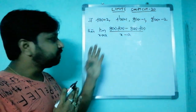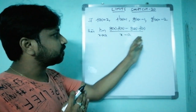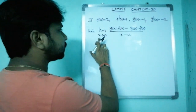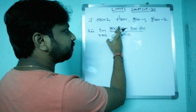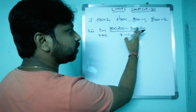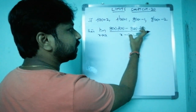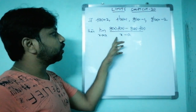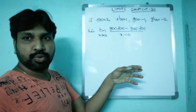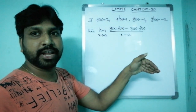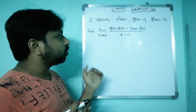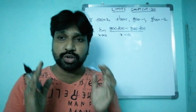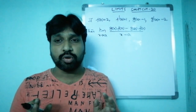First, let us check what happens if we substitute x = a. We get g(a)·f(a) - g(a)·f(a) in the numerator, which cancels to zero, and the denominator becomes a - a = 0. So we are getting a 0/0 indeterminate form.